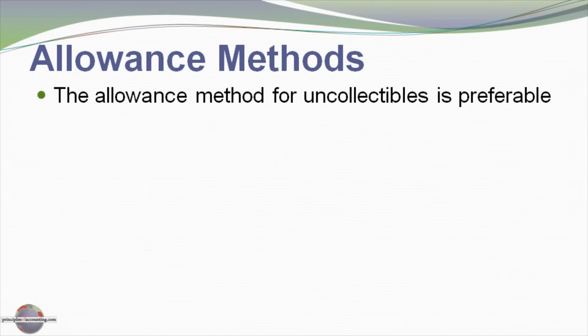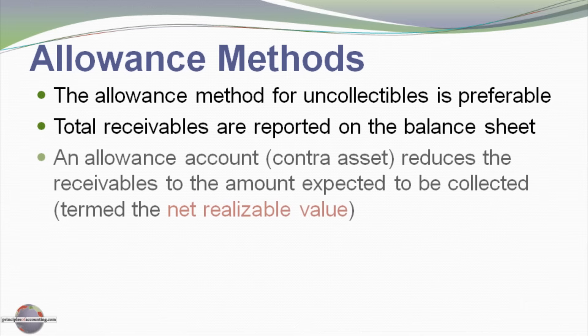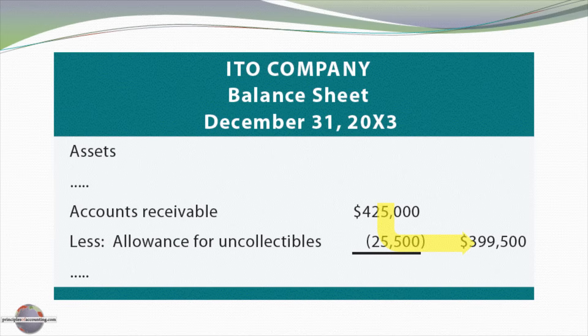The allowance method for uncollectibles is preferred. Total receivables are reported on the balance sheet. An allowance account, which is a contra asset, reduces the receivables to the amount expected to be collected, termed the net realizable value. Here I've got total accounts receivable of $425,000. We have the offsetting allowance — the portion we anticipate not being able to collect — of $25,500, giving rise to the net realizable value of net accounts receivable of $399,500. That's the balance sheet disclosure for uncollectible accounts with an allowance method.